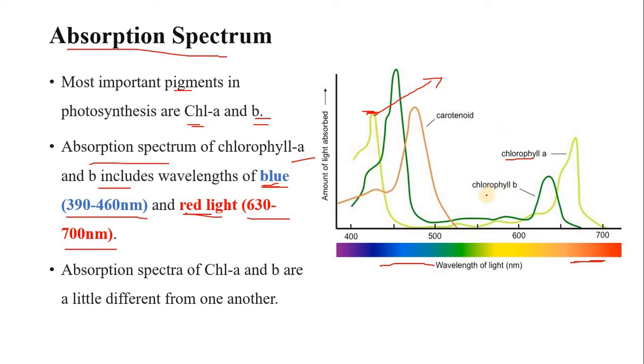If you look at the graph of chlorophyll B, this graph represents chlorophyll B compared to chlorophyll A. Chlorophyll B absorbs light mostly in the blue range.